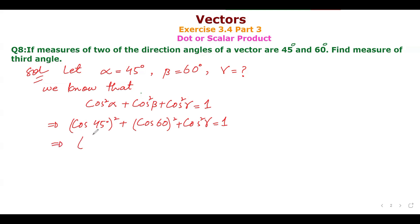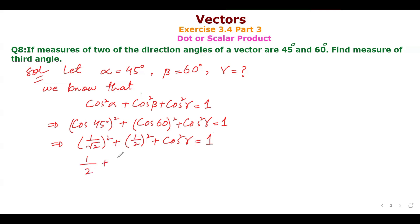cos(45°) = 1/√2, and squaring gives 1/2. cos(60°) = 1/2, and squaring gives 1/4. So we have 1/2 + 1/4 + cos²γ = 1.